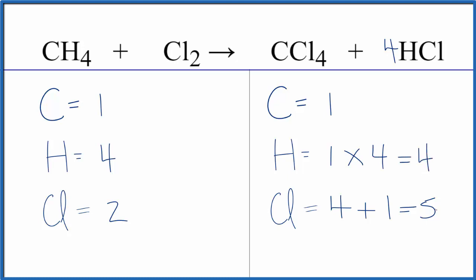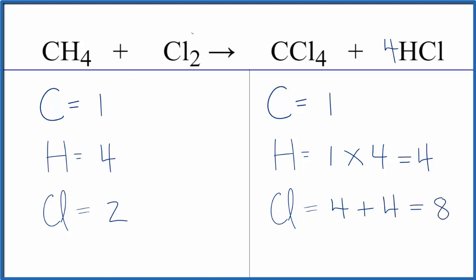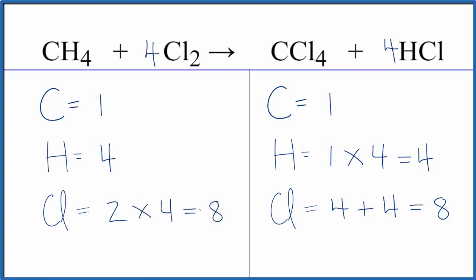Then I need to update my chlorines. I have four chlorines from the carbon tetrachloride, plus one times four gives four chlorines from the hydrochloric acid. So I have eight chlorines total, which is nice because if I put a four in front of the Cl2, that won't change the carbons or hydrogens, but I will have two times four — eight chlorine atoms. So this equation is balanced.